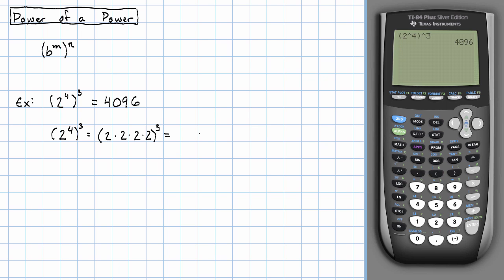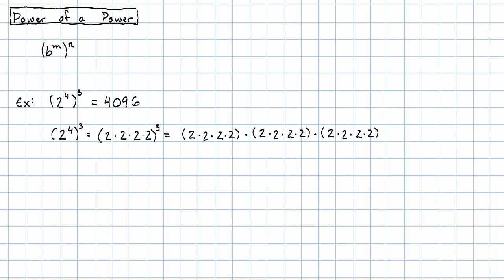Oh! But now we're taking that to the 3rd power. So we'll have 4 copies of the number 2, another copy of that, and another copy of that, all multiplied together.